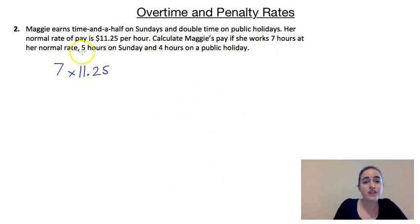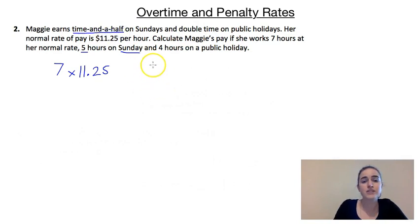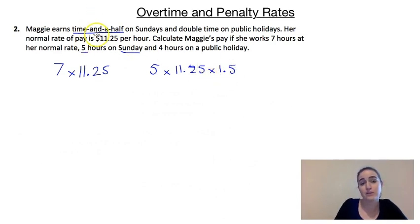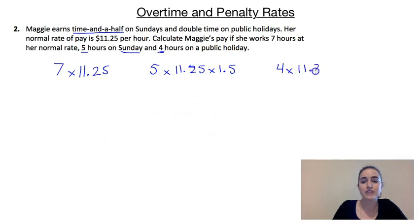To figure out how much she's getting paid for the five hours on a Sunday, we know she's getting paid time and a half on Sundays. So we'd take 5, multiply that by her normal hourly rate of $11.25, and then also multiply that by 1.5 because it's time and a half. For the public holiday, we've got four hours at $11.25, and since she's getting paid double time on public holidays, we multiply that by two.